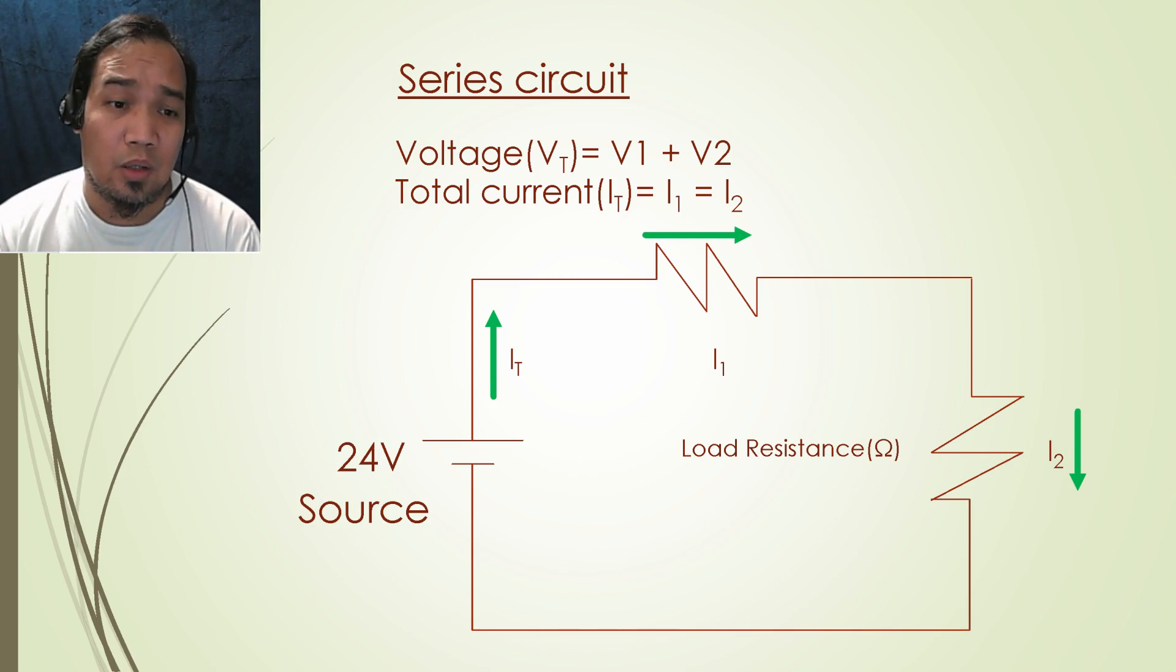In series circuit, the total voltage can be calculated by adding the voltage across the resistances, while the current is the same in one flow as illustrated here.